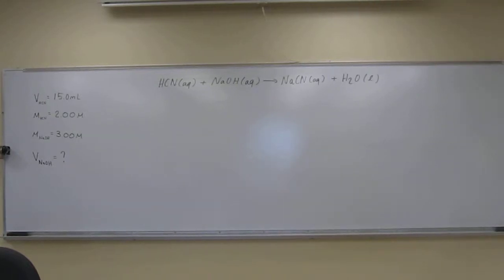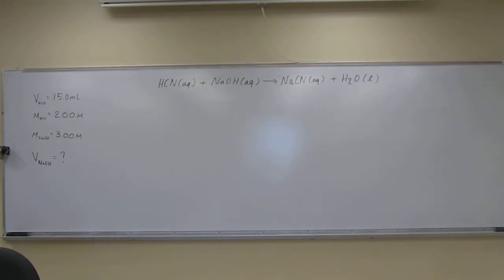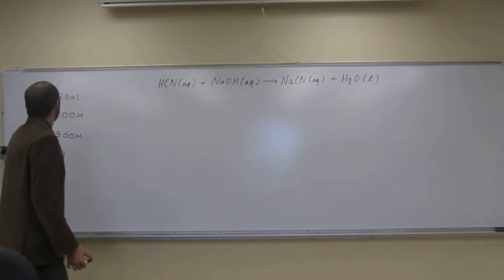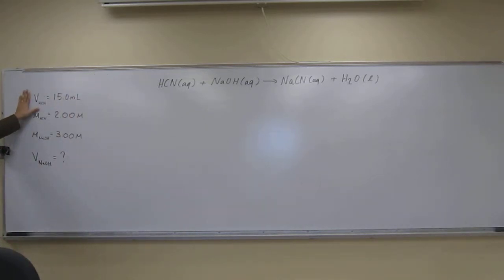So let's attempt this titration problem that we came up with, using that reaction equation we had from the last problem. We have a volume of HCN of 15.0 milliliters, the molarity of HCN is 2.00 molar, and we're going to titrate that with 3.00 molar NaOH. What is the volume of NaOH that we're going to need to reach the equivalence point?